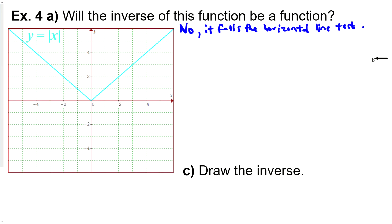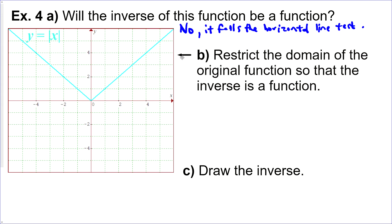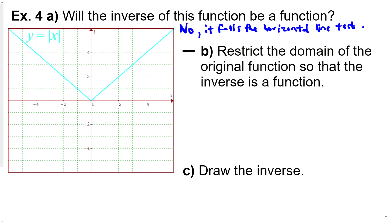Now, since it failed the horizontal line test, part b here is restrict the domain of the original so that the inverse is a function. So we could do that in a number of ways. Let's do our domain in set builder notation. That would be with these set brackets. We'll declare our domain variable x is such that, and then we'll give our restriction.